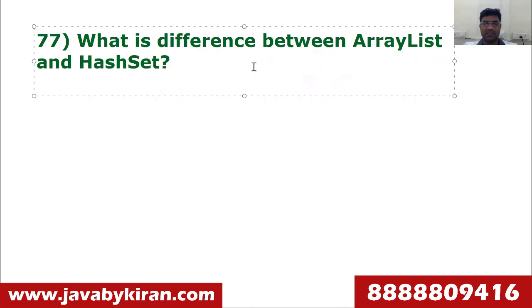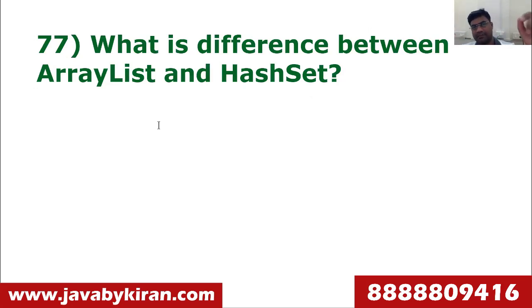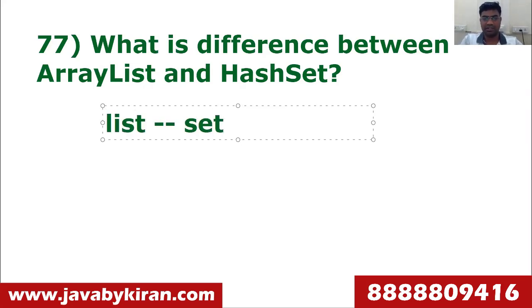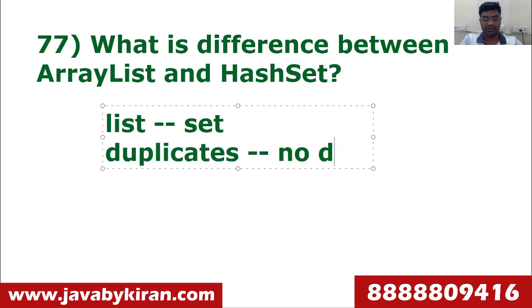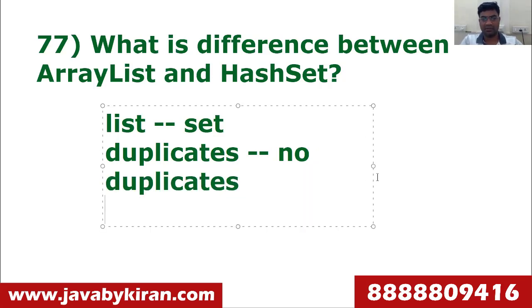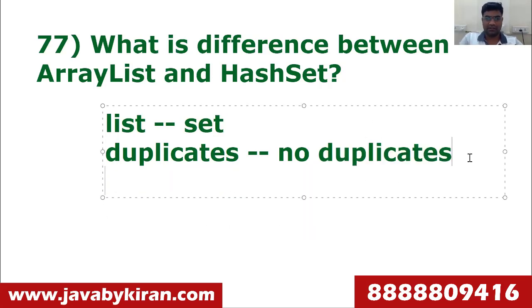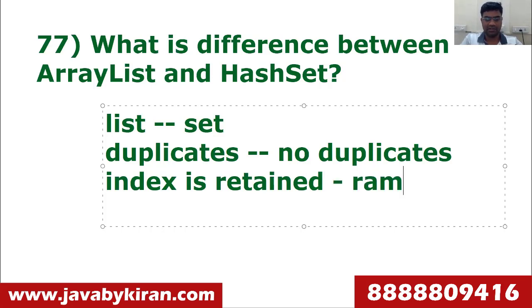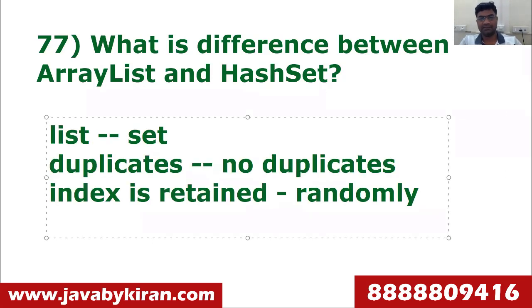Next question: what is the difference between ArrayList and HashSet? Keep it simple. Say ArrayList is related to the List interface and HashSet is related to the Set interface. ArrayList allows duplicates whereas HashSet doesn't. In ArrayList, sequence is maintained, whereas in HashSet, sequence is not maintained — elements are printed randomly.